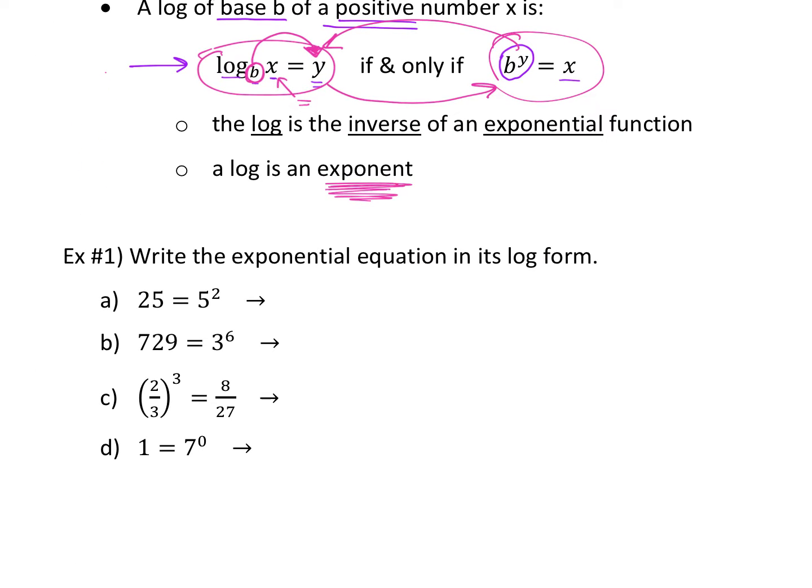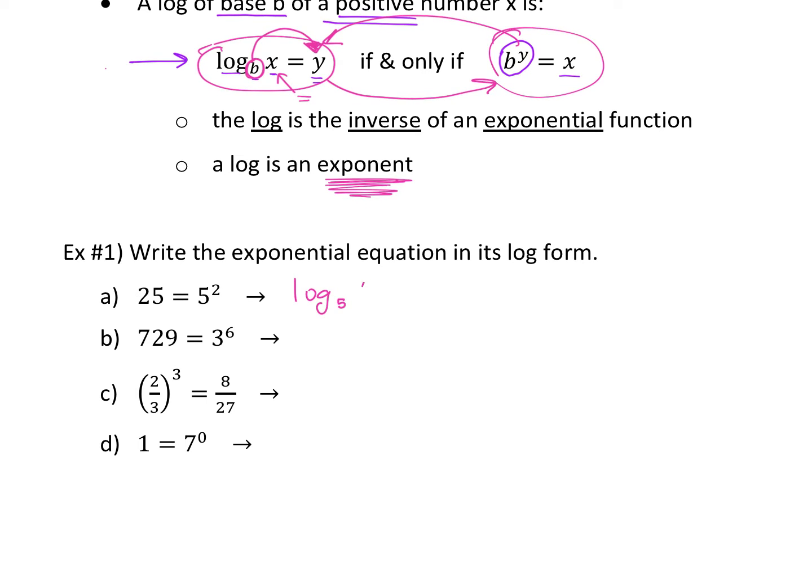All right. So let's take a look at this. You have 25 equals five squared, right? If we're going to write that in the log form, this is going to be log of base five of 25 equals, what do you think? The log is always the exponent. Two.